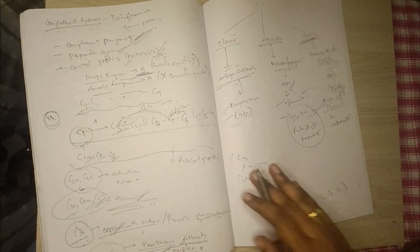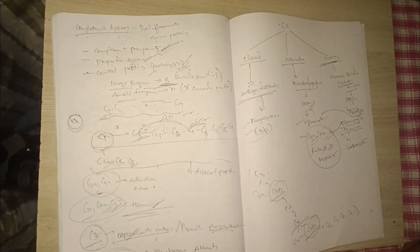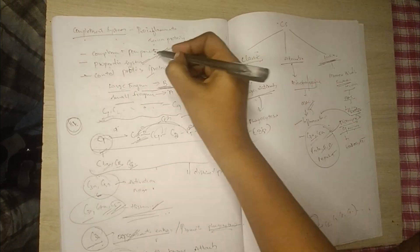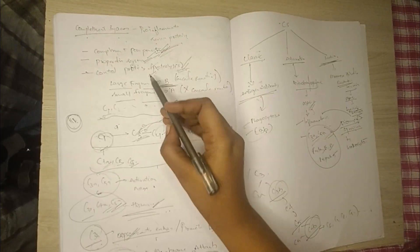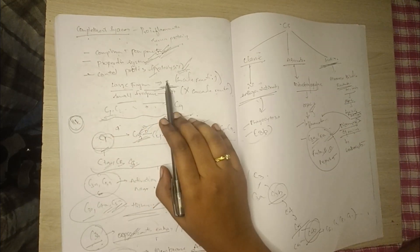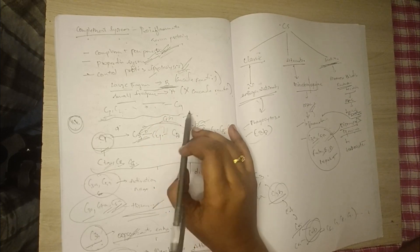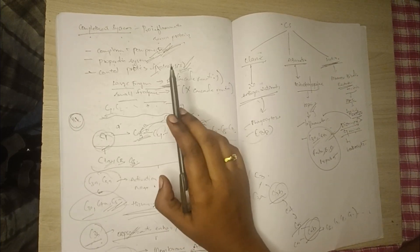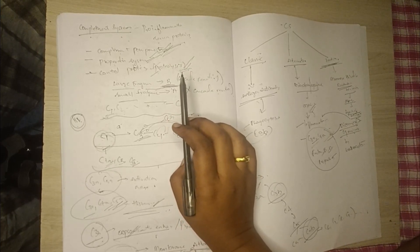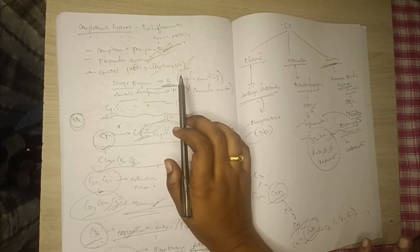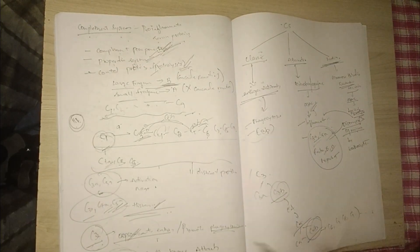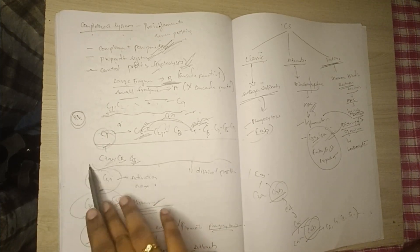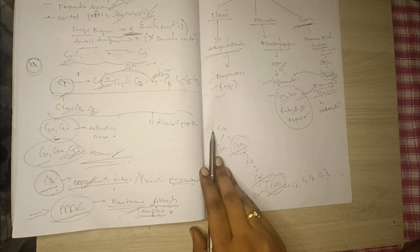For a quick revision: the complement system consists of pro-inflammatory serum proteins with complement components, the properdin system, and control proteins. Larger fragments are symbolized as 'b' with cascade reactions; smaller fragments are 'a' with no cascade reaction. The complement components run from C1 to C9 — 11 distinct proteins — with C1 existing in three forms: C1q, C1r, and C1s.